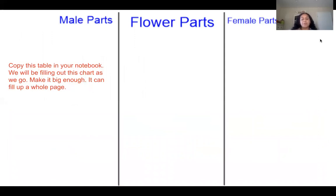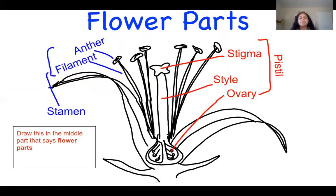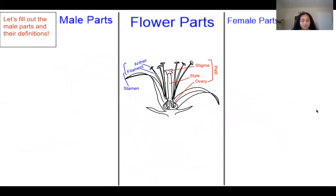We're going to draw this table in our notebook and fill it out as we go — give yourself enough room, I'd suggest a whole page. One side of the chart is male parts, the middle is flower parts, and the other side is female parts. Draw the flower in the middle section and label the pistil — which has a stigma, style, and ovary — and the stamen, which has the anther and filament.